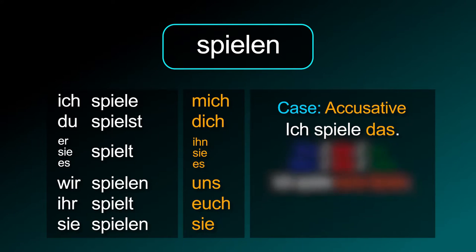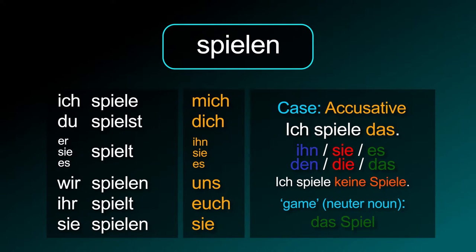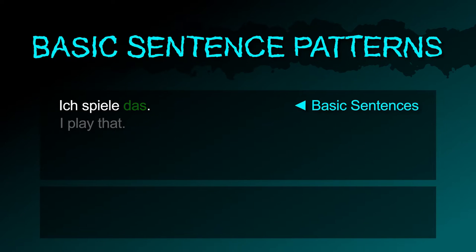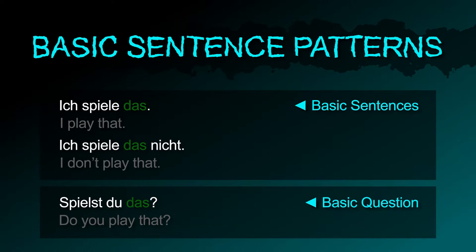Use the correct personal pronoun or article depending on the noun's gender. 'I don't play games' is ich spiele keine Spiele. Its noun is neuter: das Spiel. Basic sentences: ich spiele das, ich spiele das nicht. Basic question: spielst du das?